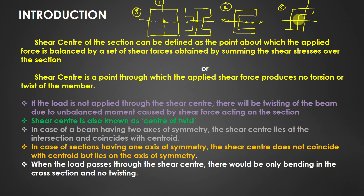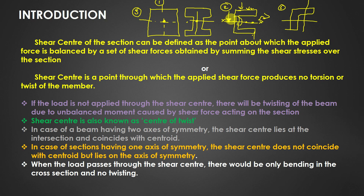For unsymmetrical sections, we shall see where the shear center is located. The main significance of the shear center is: if you apply the load at the shear center, there will be no twisting of the beam — there will be only bending. If you apply load anywhere except the shear center, the beam may be subjected to twisting. To avoid torsion or twisting, you have to apply the load at the shear center. This is an imaginary point, but we use it when designing steel structures to find the amount of torque produced.